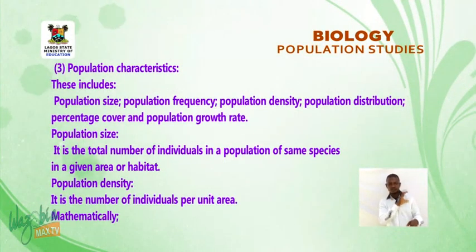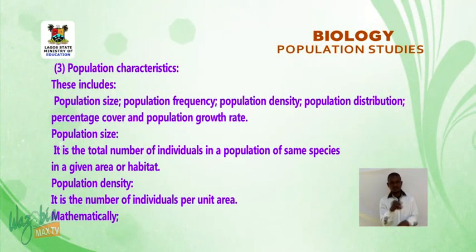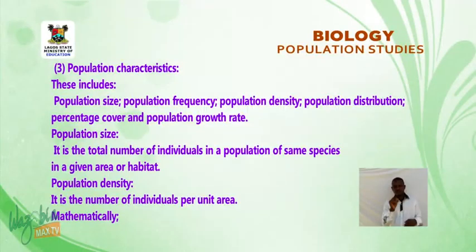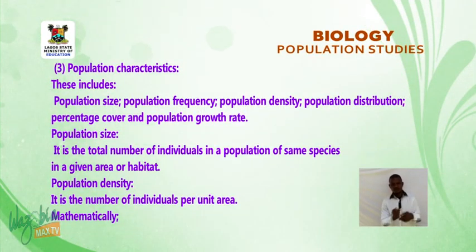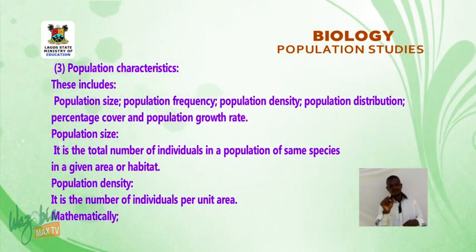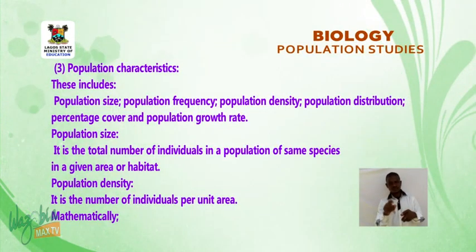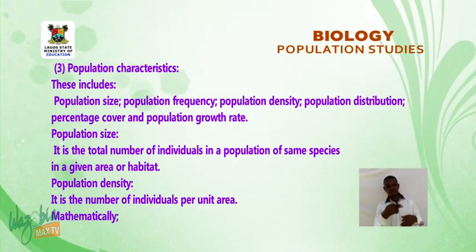Population Characteristics include: population size, population frequency, population density, population distribution, percentage cover, and population growth rate. Population Size is the total number of individuals in a population of the same species in a given area or habitat.